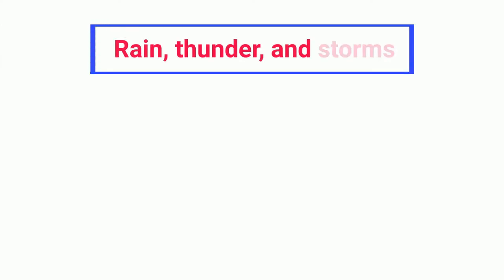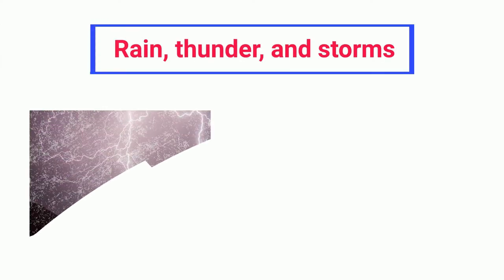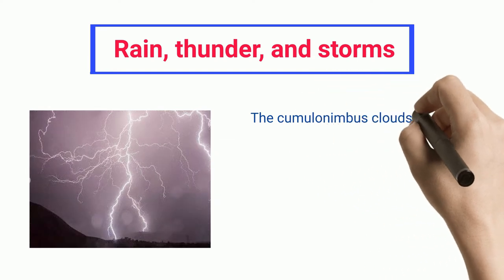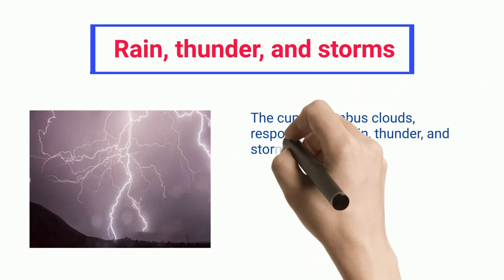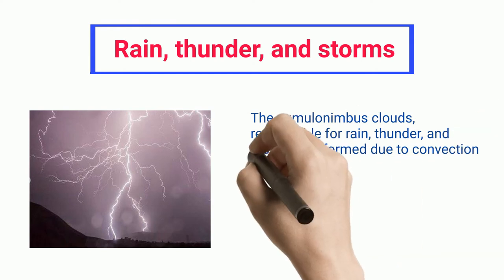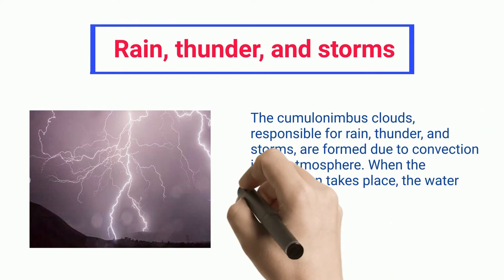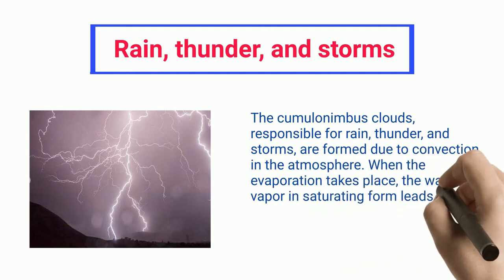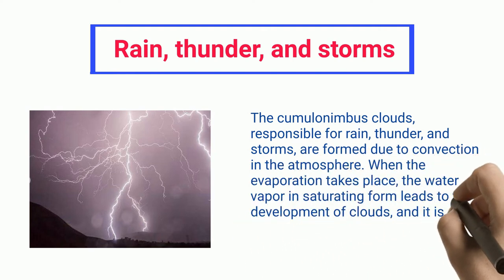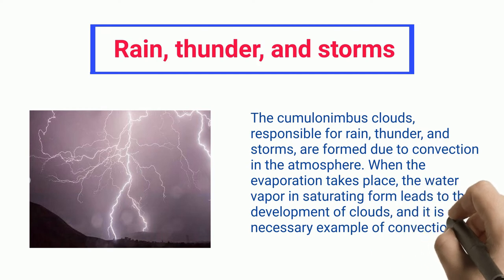Rain, Thunder, and Storms: The cumulonimbus clouds, responsible for rain, thunder, and storms, are formed due to convection in the atmosphere. When the evaporation takes place, the water vapor in saturating form leads to the development of clouds, and it is a necessary example of convection heat transfer in nature.